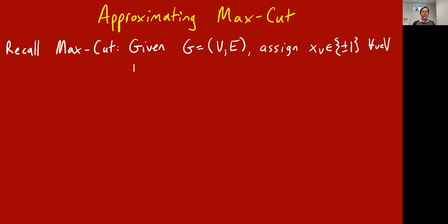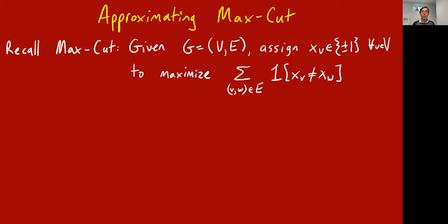Let's phrase the max cut problem in the following way. You're given an undirected graph G, and you're supposed to partition the vertices into two parts. We're going to call them all the vertices assigned value 1, and all the vertices assigned value minus 1. So we assign values xv to the vertices, plus or minus 1. What we're trying to do is maximize the number of edges that have their endpoints on different sides of the cut — maximize the sum over all edges vw of the indicator that we have assigned different cut sides to the two endpoints v and w.